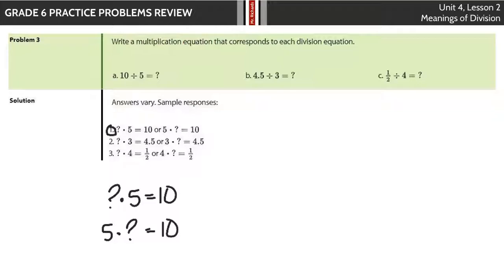So, 4.5 or 4 and 5 tenths divided by 3 equals what? Well, your two equations for here would be, if I take the what and multiply by 3, I know I'm going to get 4 and 5 tenths. So you could also take the what, I'm sorry, the 3 and multiply by the what to get 4 and 5 tenths.